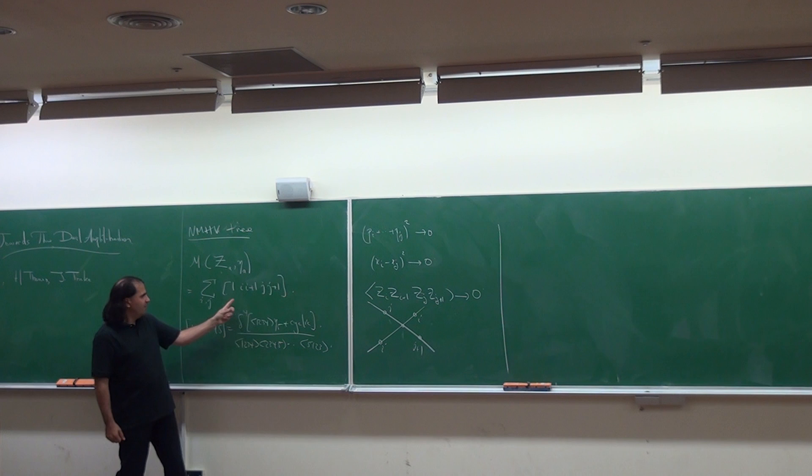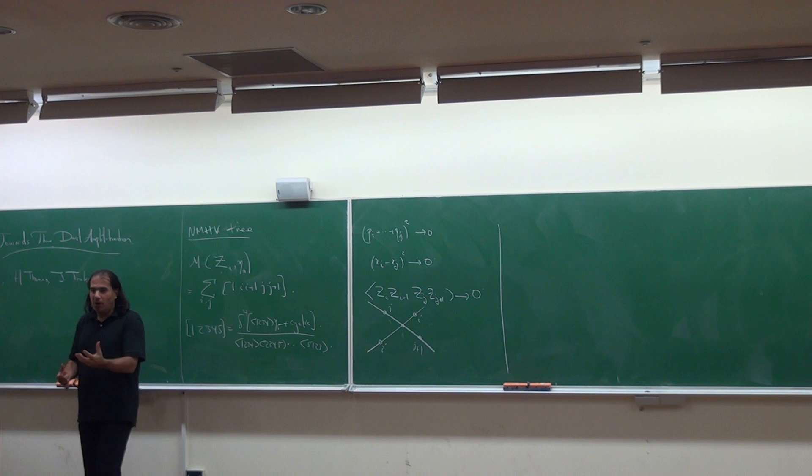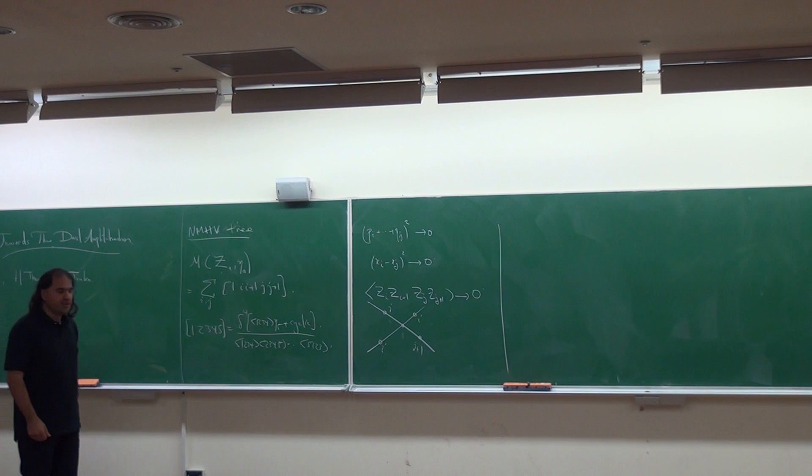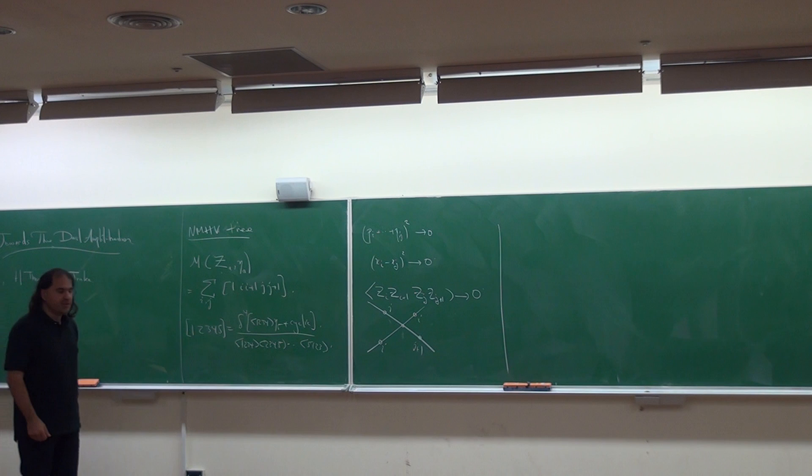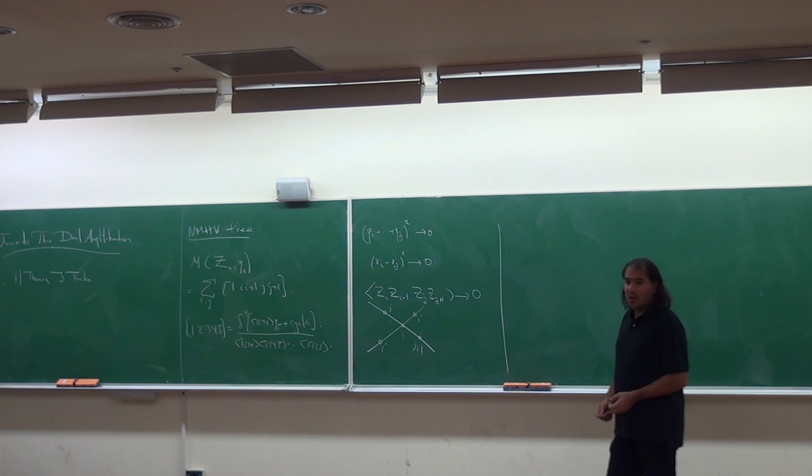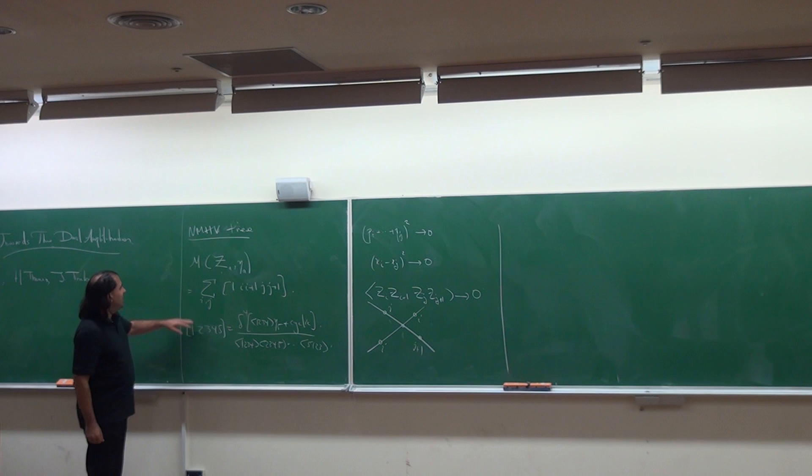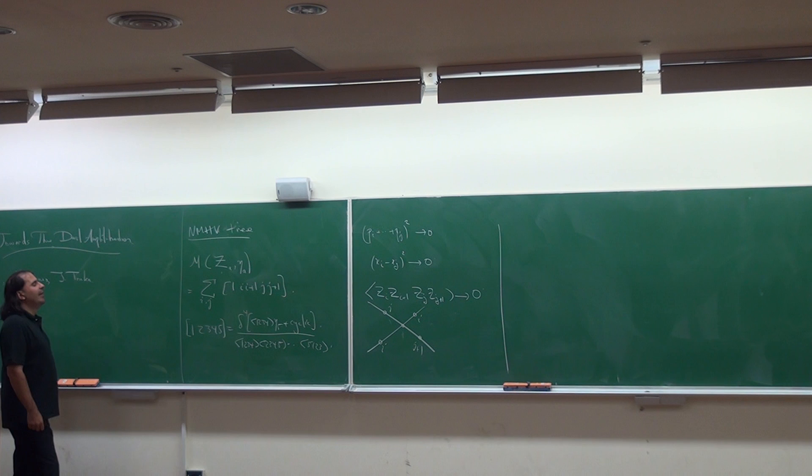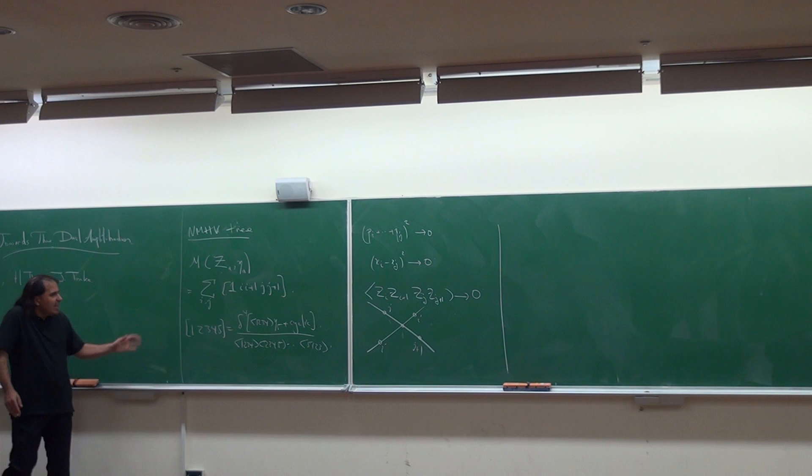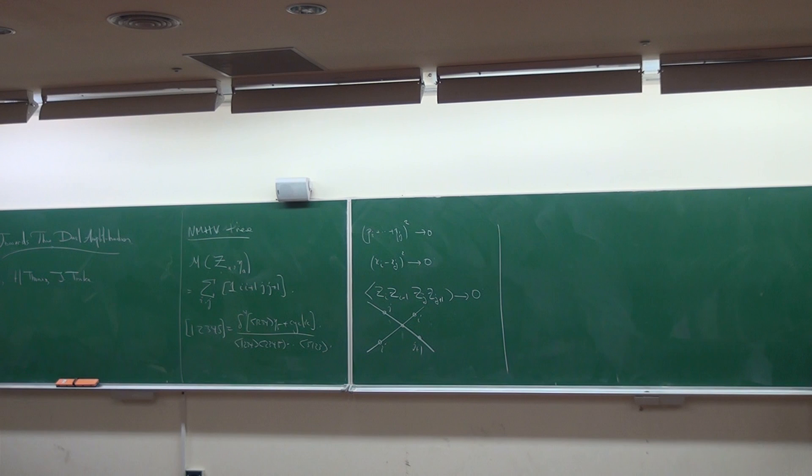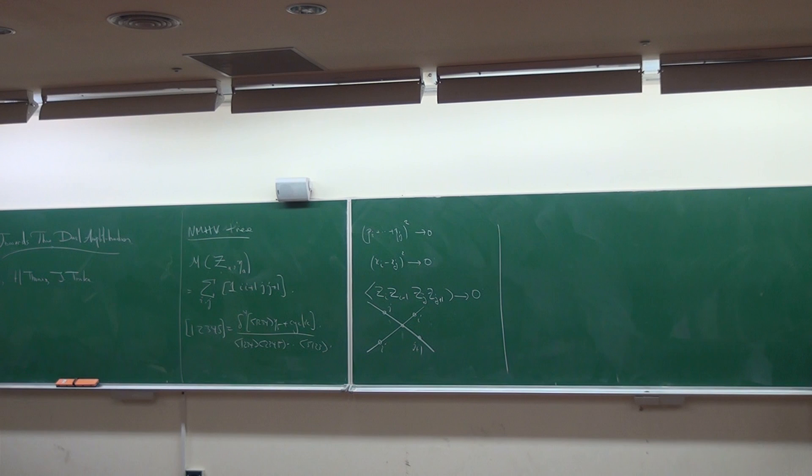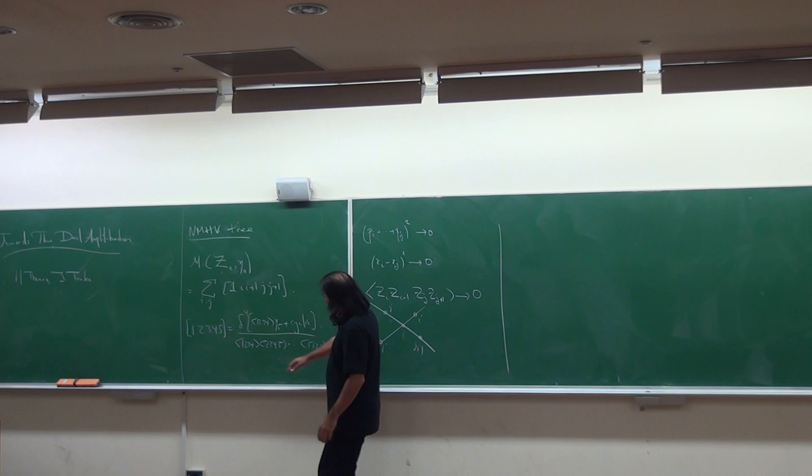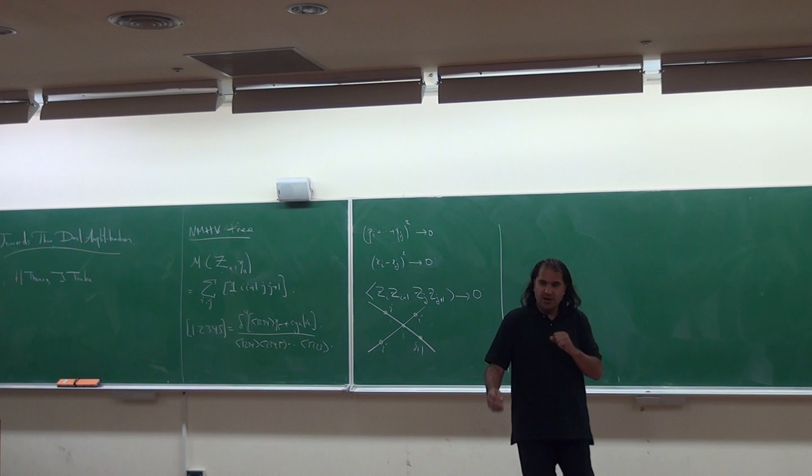Already when we go to six particles, every term has five poles. One involving i, i+1, j, j+1 is a physical pole, but typically has four other spurious poles. They miraculously cancel in the sum to give something with only physical poles. Another feature: even though the amplitude is cyclically invariant, this expression is not manifestly cyclically invariant. There's a simple identity explaining why these are equal.